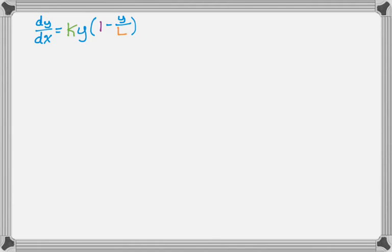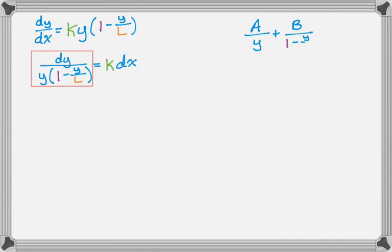To begin with, I'm going to separate. So I get dy over y times the quantity 1 minus y over L is equal to k times dx. At this point, the reason this is kind of a Calc 2 topic, or a BC topic, is I need to do partial fractions on the left-hand side, so I get A over y plus B over 1 minus y over L is equal to 1 over y times that quantity.